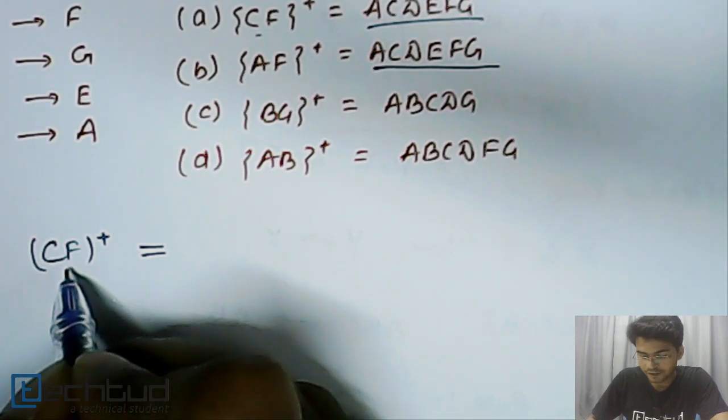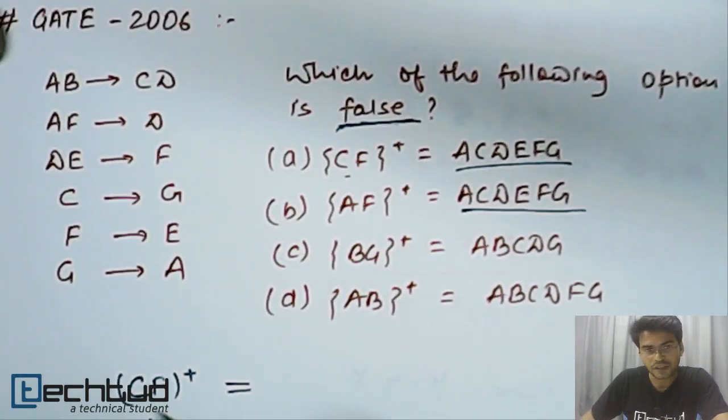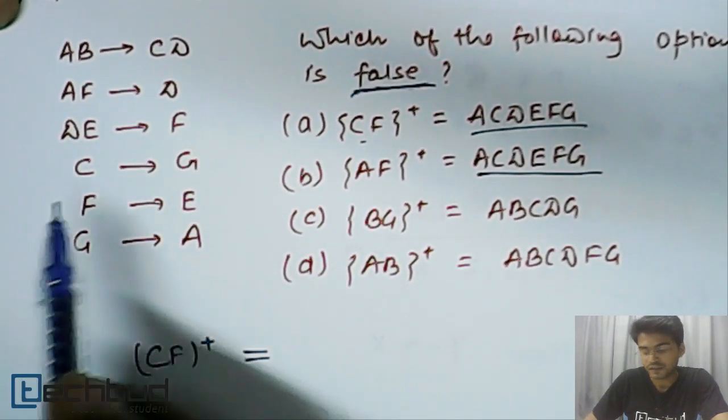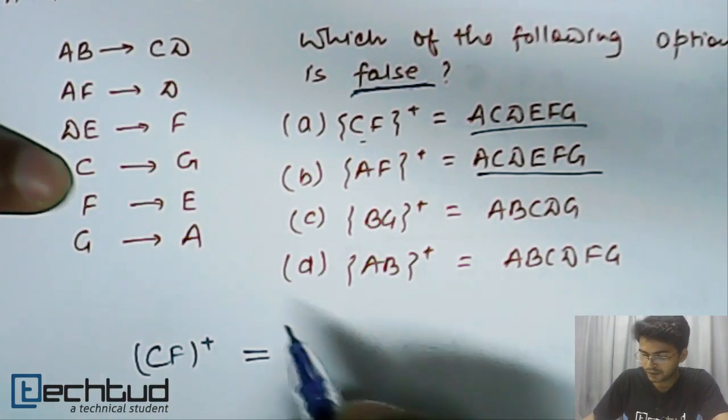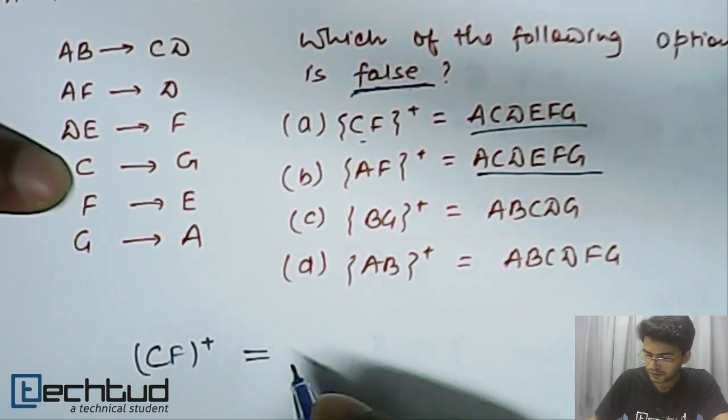We have C and F. By using this functional dependency, we can determine G as C determines G. So, we can always determine G. Fine.